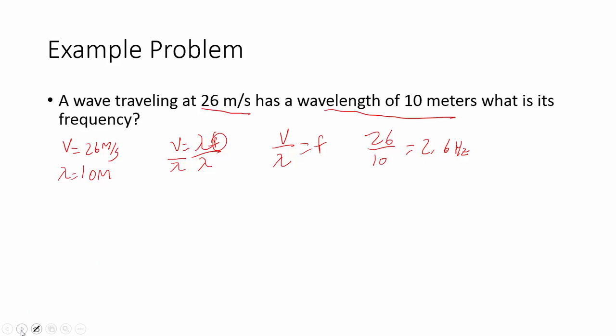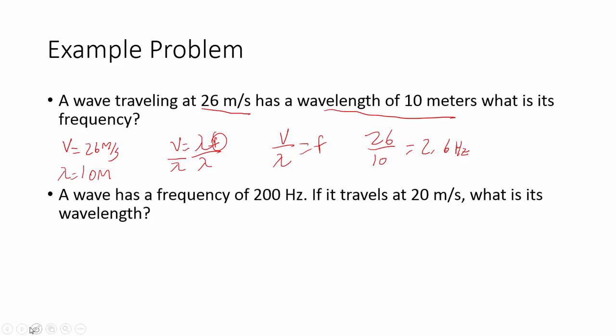One more example, and then I'll let you guys continue on. A wave has a frequency of 200 hertz. If it travels at 20 meters per second, what is its wavelength? Again, write down the information you're given.